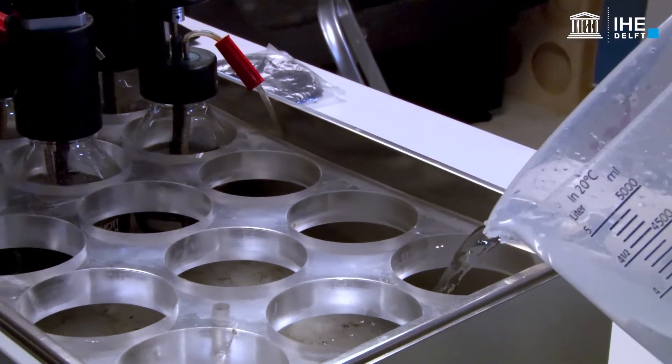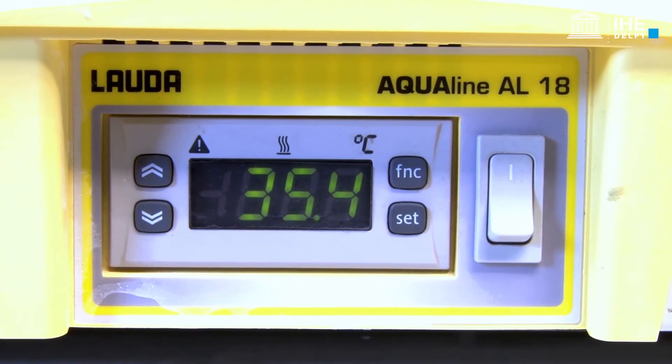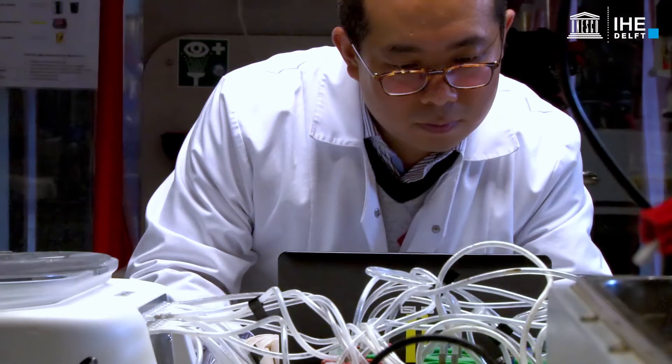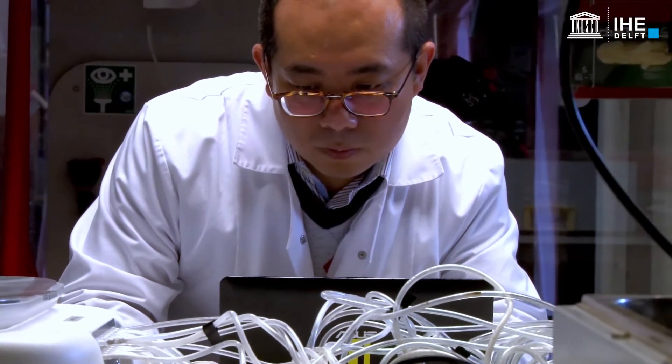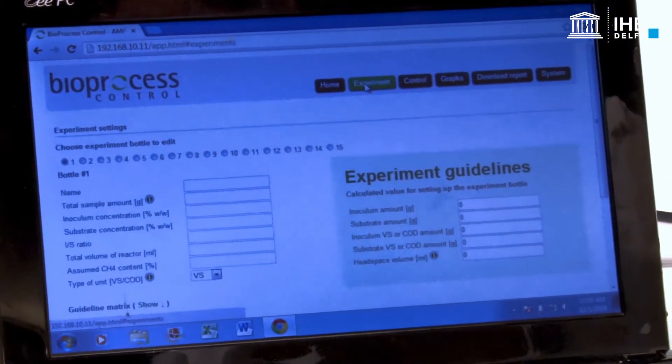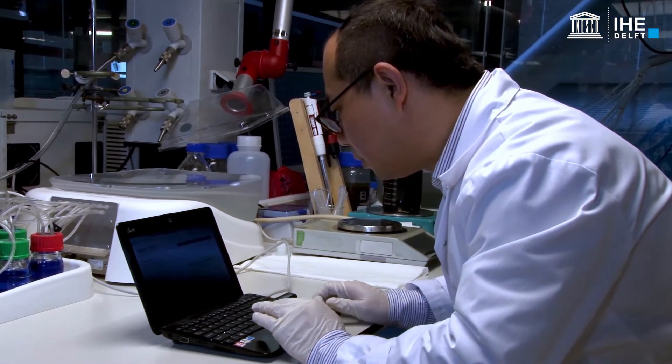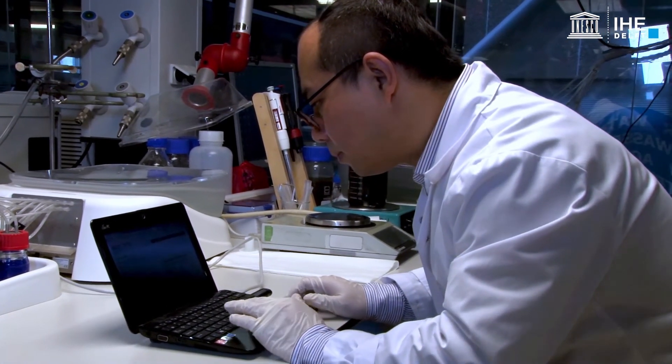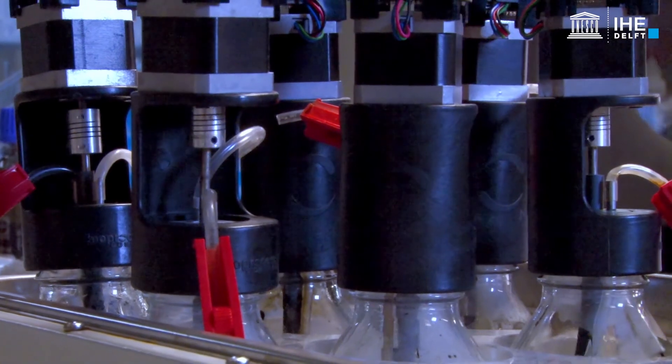Fill the water bath and set the temperature of the water bath. In this example, a temperature of 35 degrees centigrade is used. Input the names of the samples and set the parameters such as COD or volatile solids of the substrate and volatile solids or volatile suspended solids of the inoculum in the program. Then start the motors and the program.